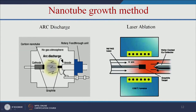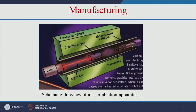In arc discharge, graphite cathode and anode are connected and power is applied, and carbon nanotubes are deposited on the cathode. In laser ablation, a laser is applied to a graphite target kept in a furnace at 1200 degrees Celsius. In the presence of argon gas, the laser vaporizes the graphite target and produces carbon nanotubes, which are then collected in a water-cooled collector.